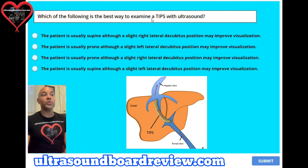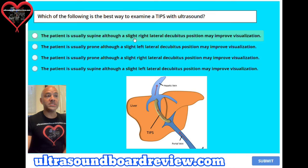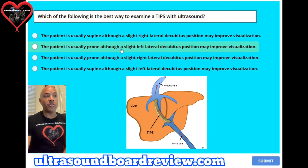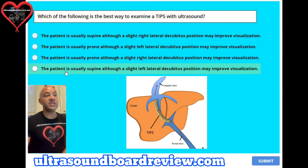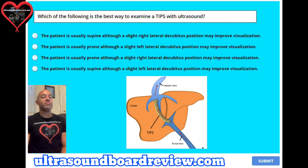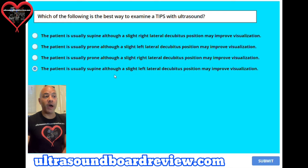Question 7. Which of the following is the best way to examine a TIPS with ultrasound? A. The patient is usually supine, although a slight right lateral decubitus position may improve visualization. B. The patient is usually prone, although a slight left lateral decubitus position may improve visualization. C. The patient is usually prone, although a slight right lateral decubitus position may improve visualization. Or D. The patient is usually supine, although a slight left lateral decubitus position may improve visualization. The answer is D.